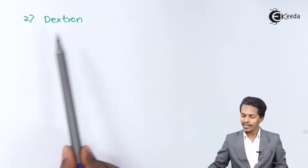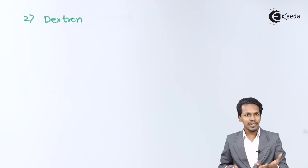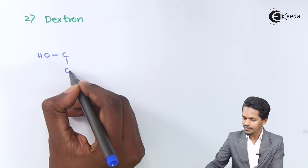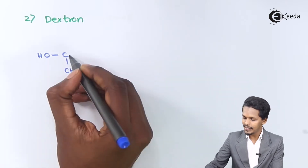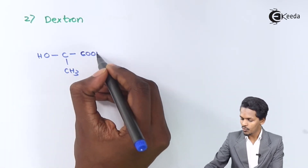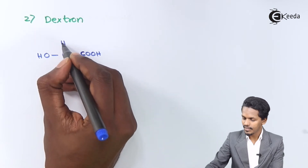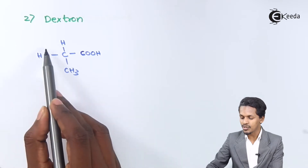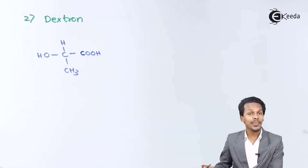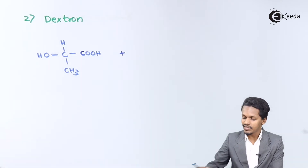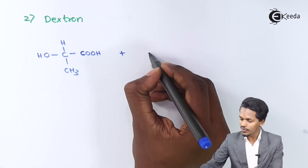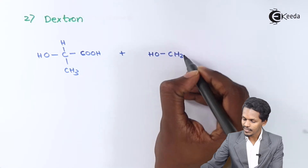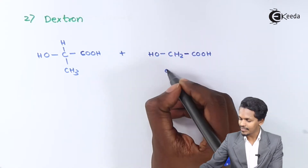The next example is dextron. The first starting material is lactic acid, with structure OH, CH3, COOH — that is 2-hydroxypropanoic acid. It reacts with the second starting material, glycolic acid, which has the structure HOCH2COOH.